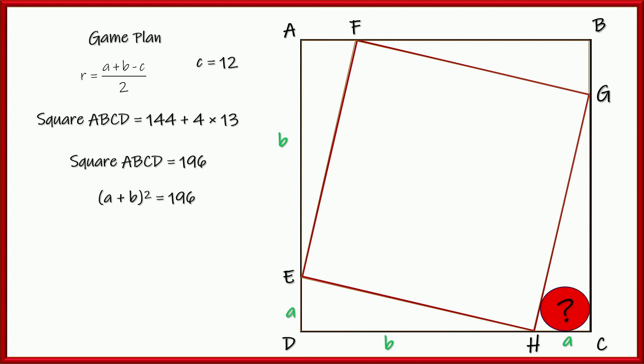So, side length squared, A plus B squared is 196. That means A plus B must equal 14. Now, I don't know what A is. I don't know what B is, but I also don't need to. I just need to know that they are 14 because my formula is A plus B minus C. So, A plus B is 14.